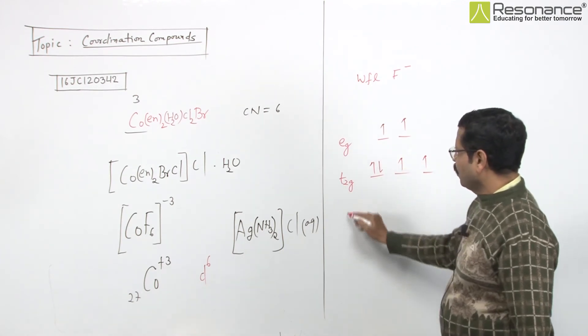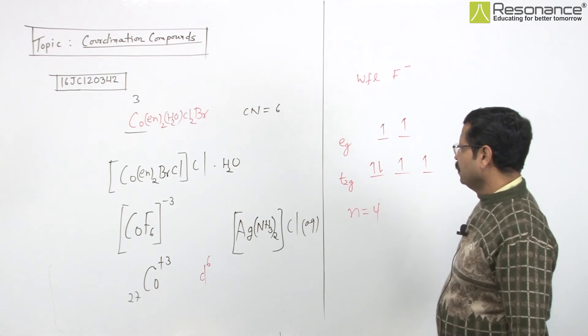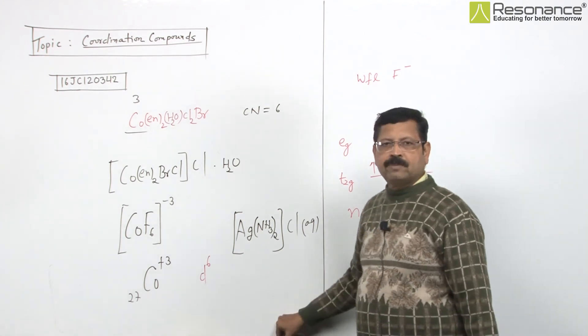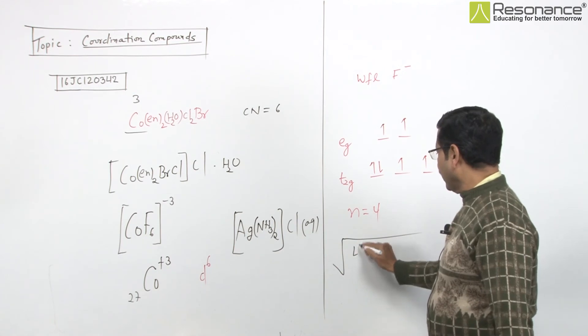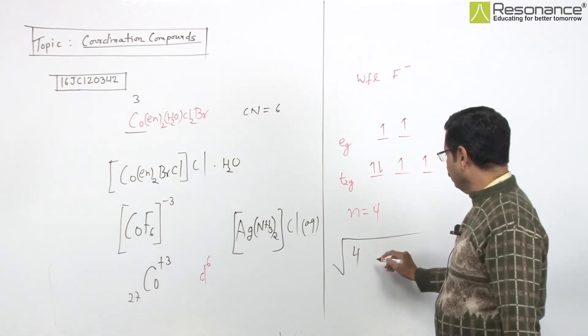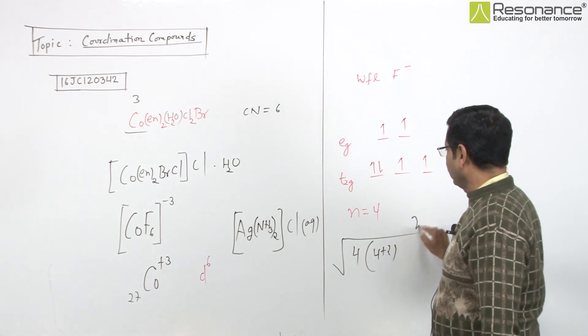So how many unpaired electrons? Four unpaired electrons. The spin-only magnetic moment value will be √[n(n+2)] Bohr magneton - I'll apply this formula.